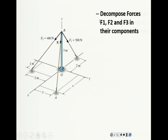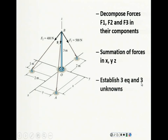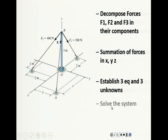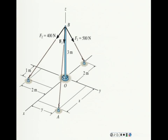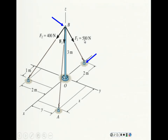I know F1 completely — magnitude and location — so I can express it in Cartesian form. I know F2 as well. The procedure is always the same: express F1, F2, F3 in Cartesian notation, set the summation equal to the resultant force, and establish three equations. Coordinates of the first anchor point: (−2, 0, 0). B is on the z-axis at (0, 0, 3). Position vector = tip minus tail: (−2, 0, 0) − (0, 0, 3) = (−2, 0, −3).